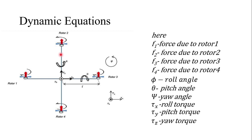Pitch motion means rotation about the y axis. For rotation about the y axis, the torque provided by rotor 2 and rotor 4 is zero since they lie on the y axis. The required torque is provided by rotor 1 and rotor 3. Torque from rotor 1 is taken as positive since it rotates counterclockwise, and torque from rotor 3 is taken as negative since it rotates clockwise.